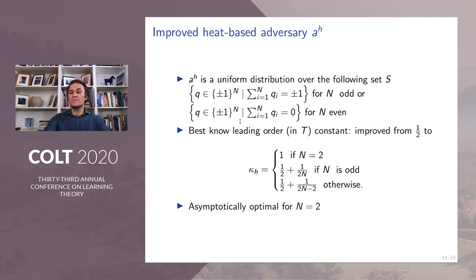We obtained the best-known leading order in T constant, kappa_H, which improves from one-half in the classic case. This adversary is also asymptotically optimal for N equals 2.